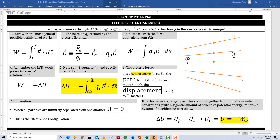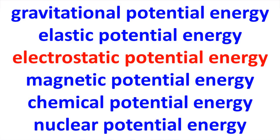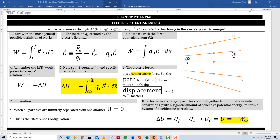Electric potential energy. This is the third kind of potential energy we've studied. The first one was gravitational potential energy, then elastic potential energy, and now electric potential energy. Boxes 1 through 8 show us what happens when a charge moves through an electric field.